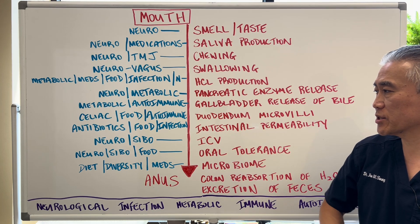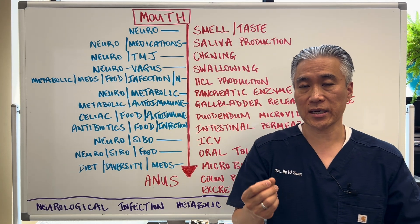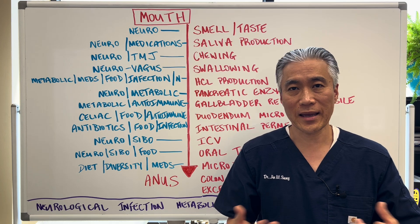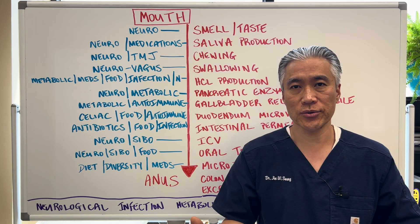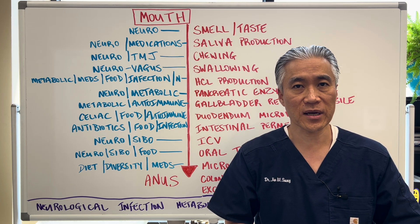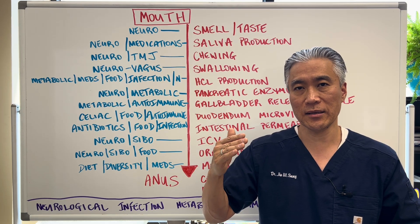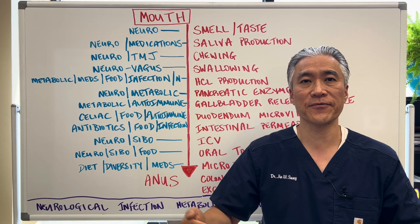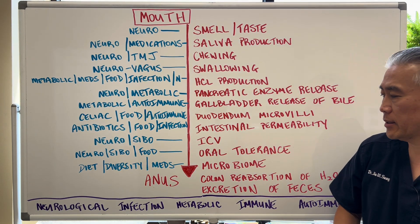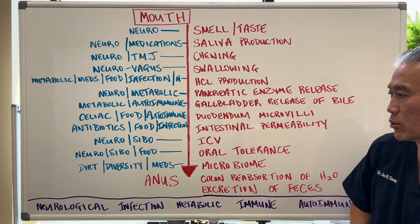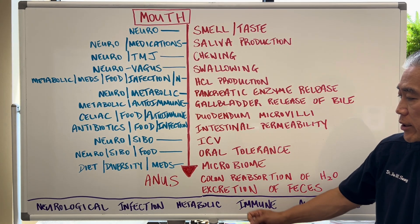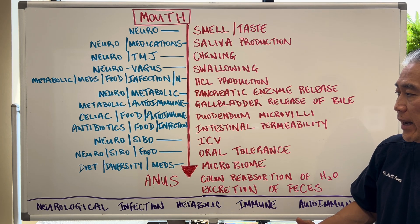Oral tolerance — these are individuals who can only eat maybe ten different types of foods, and anything else causes a reaction. It's because of a restrictive diet followed for long periods of time. Over time they eliminate foods rather than add foods back, and they lose oral tolerance. You also have microbiome diversity issues, and then colon reabsorption issues of water and excretion of fecal matter.